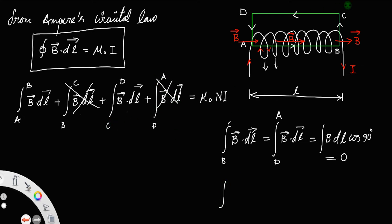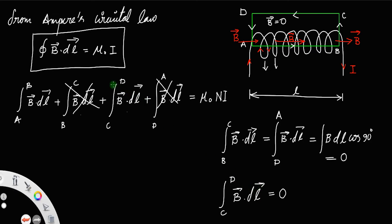In the case of arm C to D, which lies outside the solenoid, the magnetic field is zero because the magnetic field only exists inside the solenoid. So this integral also vanishes.